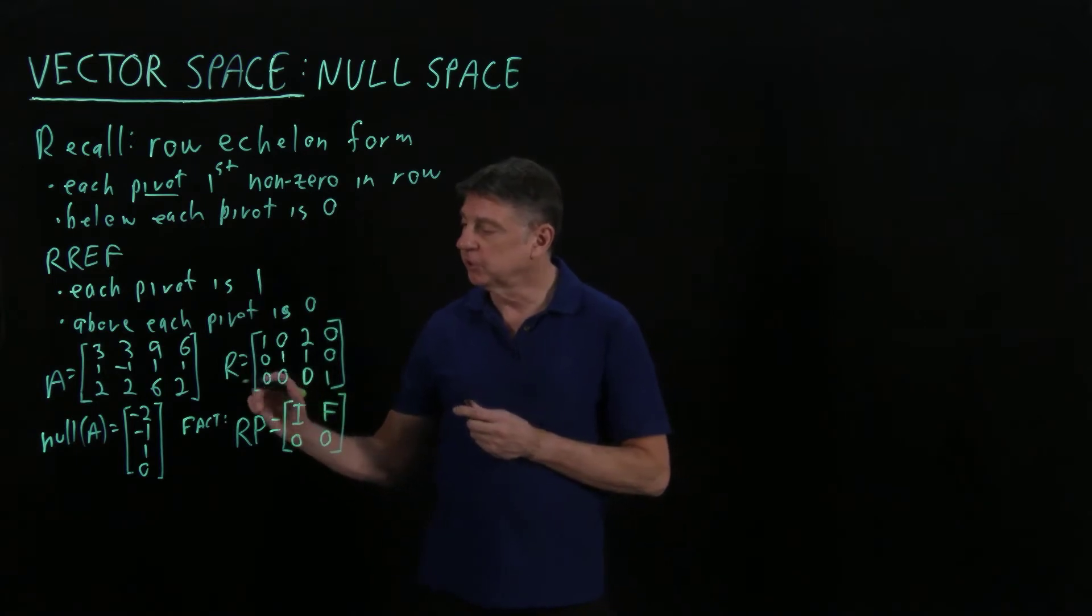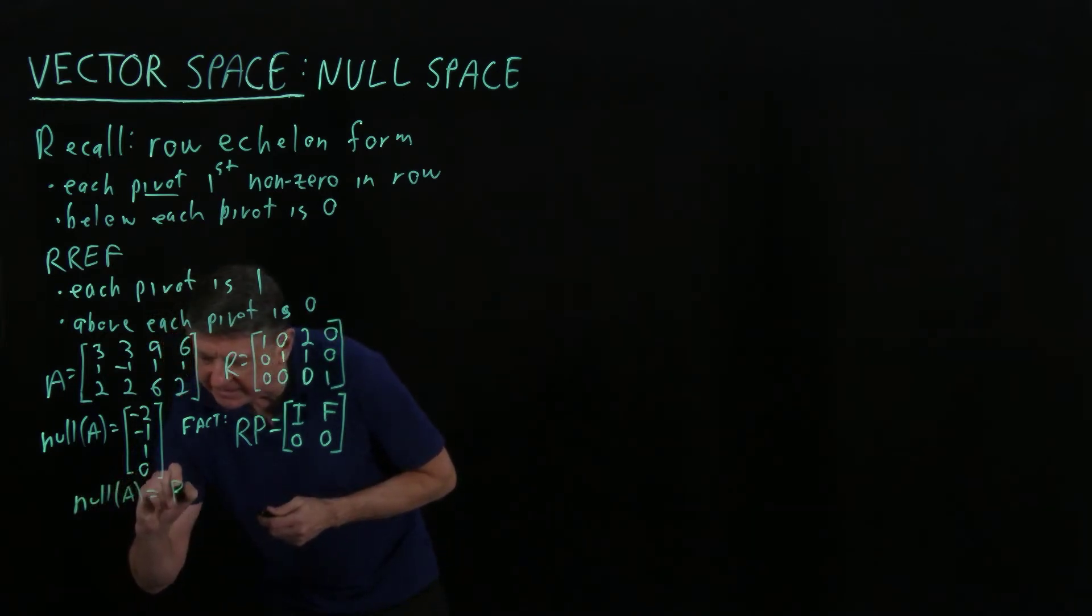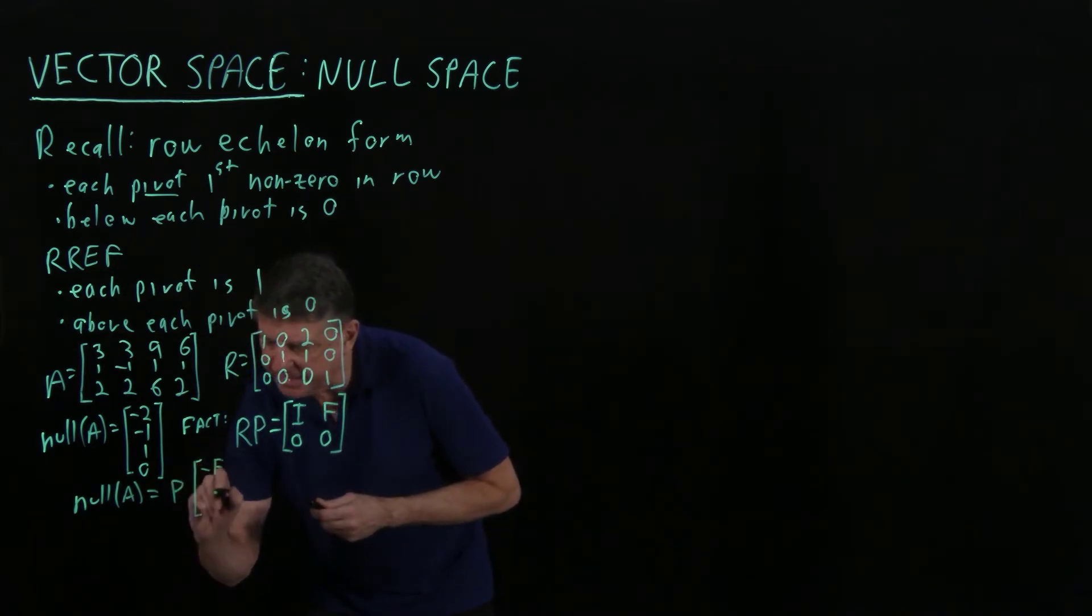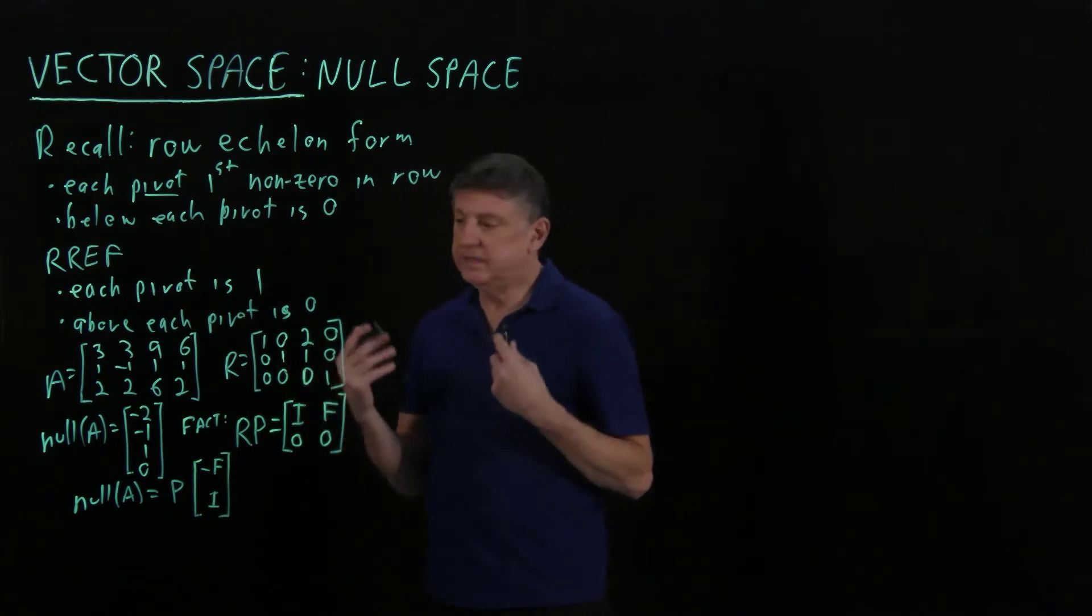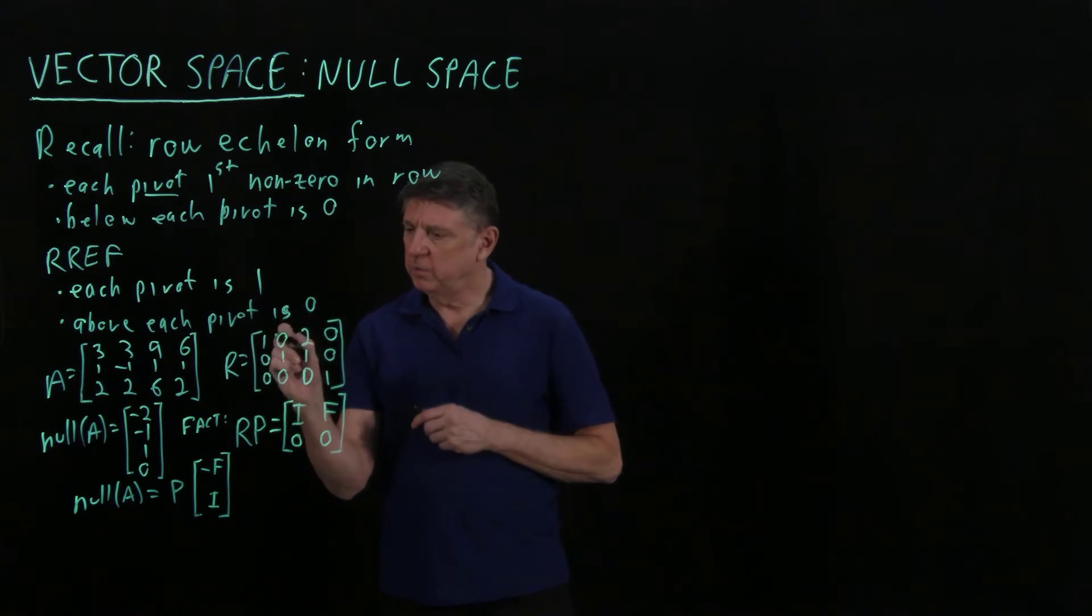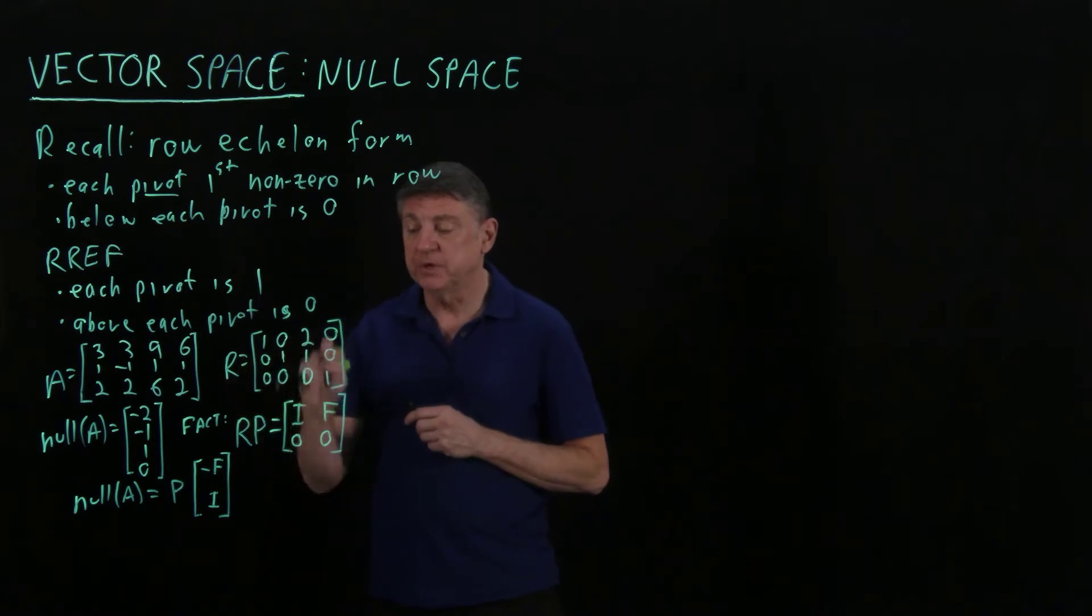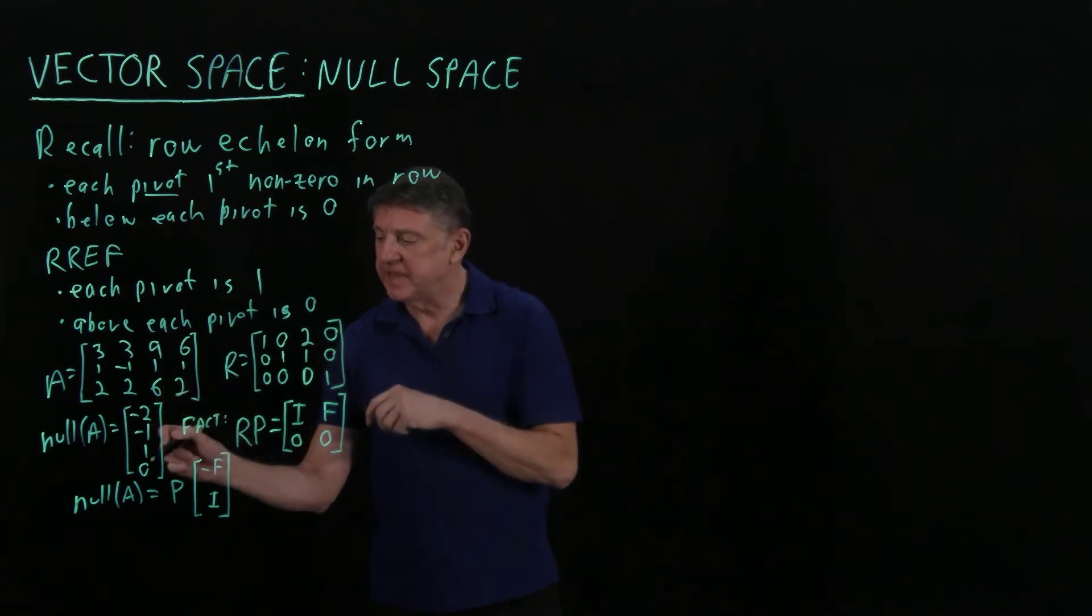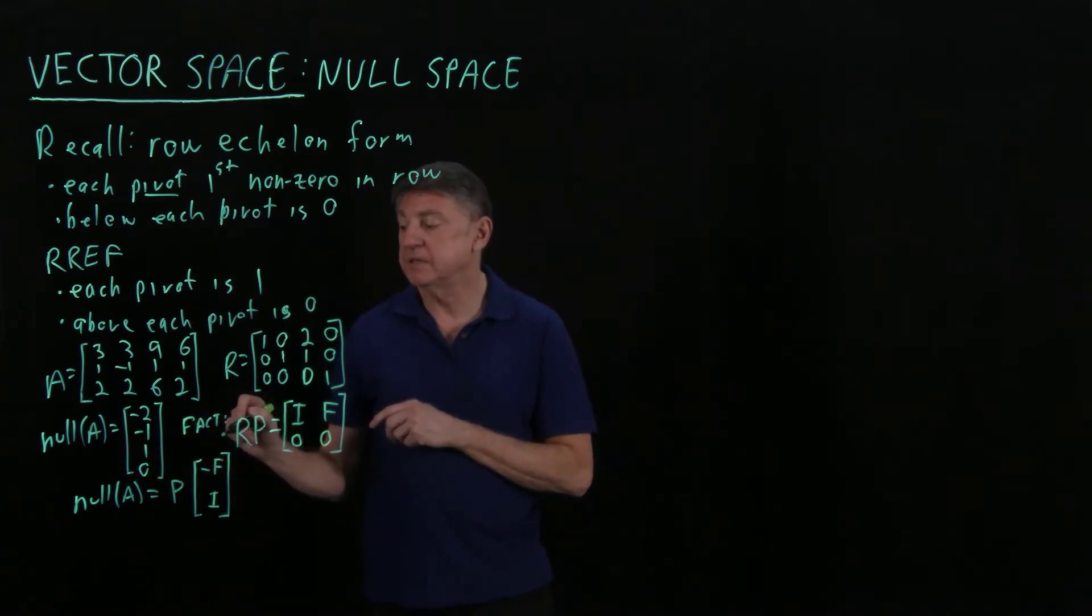It will turn out that the null space of any matrix is: we take that permutation matrix first, then multiply it by minus F, and then we have an identity matrix that is the same size as those rows. In this case, this factor would be (2, 1, 0), and then I would have to append a 1 onto it, then permute it to get it into the right form. The -2 and -1 stay in place, and the 1 and 0 get swapped by the permutation. This is the way that I personally find the null space of a matrix.